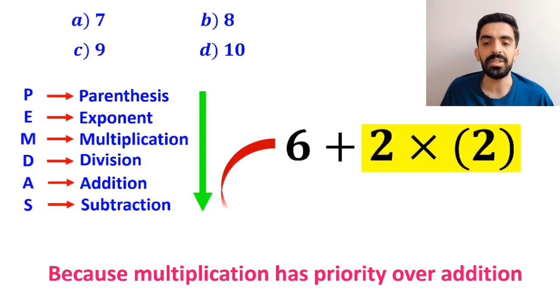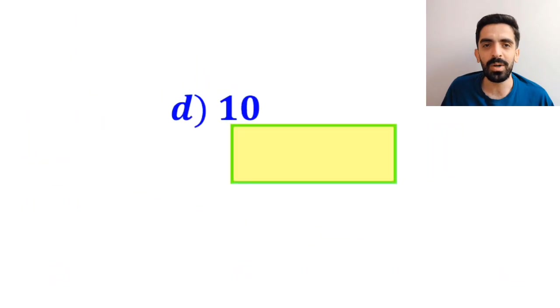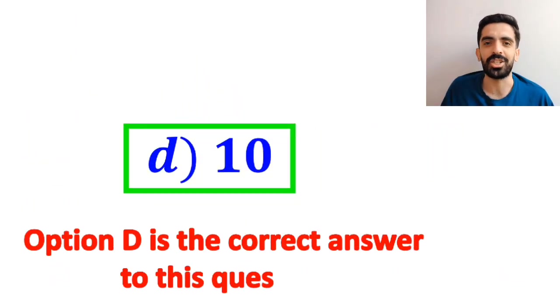So, instead of this expression, we can write 6 plus 4, which ultimately gives us the answer 10. Therefore, option D is the correct answer to this question.